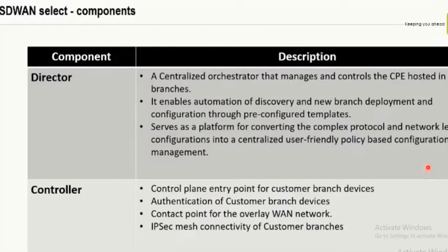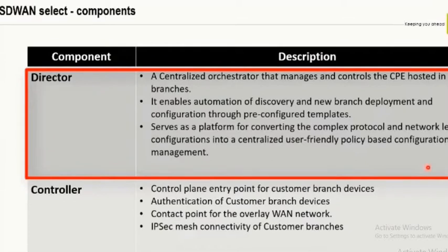Let's talk about the Director. It is a configuration orchestrator that manages all deployed CPs centrally. There is no need to look into multiple management systems to check where an asset is hosted, what is its status, or whether a link is down or there is a BGP flap. All these things can be checked from the Director console. It is a centralized repository from where we can discover newly deployed branch locations through zero-touch provisioning, which we will discuss in upcoming slides.